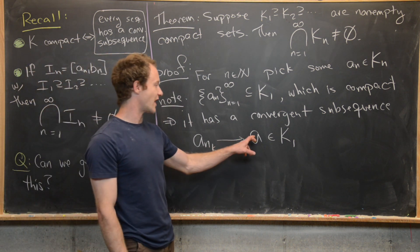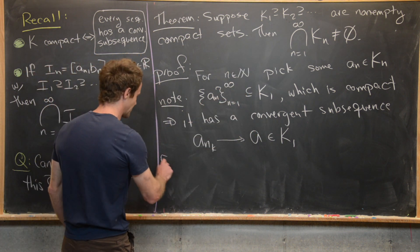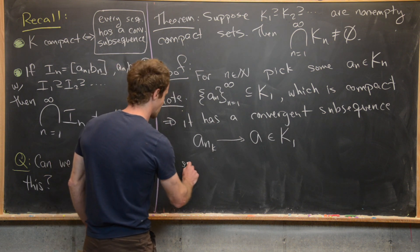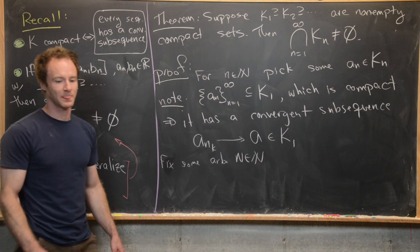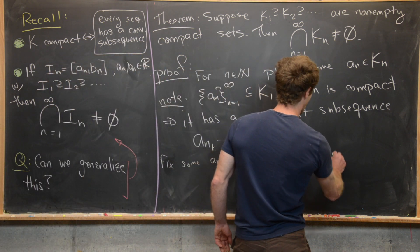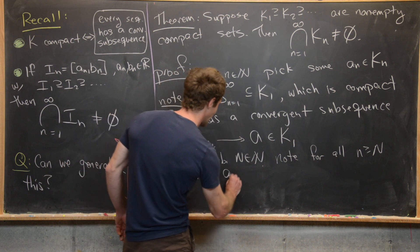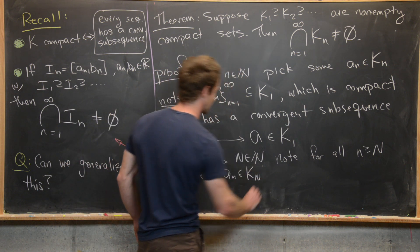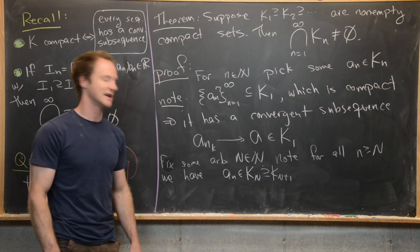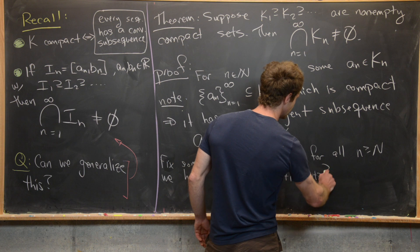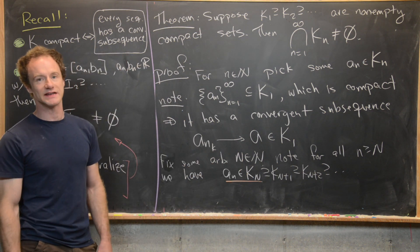Now what we want to do is show that this limit point a is actually inside all of the K_n's. Fix some arbitrary capital N (a natural number). For all little n greater than or equal to capital N, we have a_{n} inside of K_N — that's because of the nestedness: K_{N+1} ⊆ K_N, K_{N+2} ⊆ K_N, and so on. So we've shown that the tail of the sequence is inside K_N.